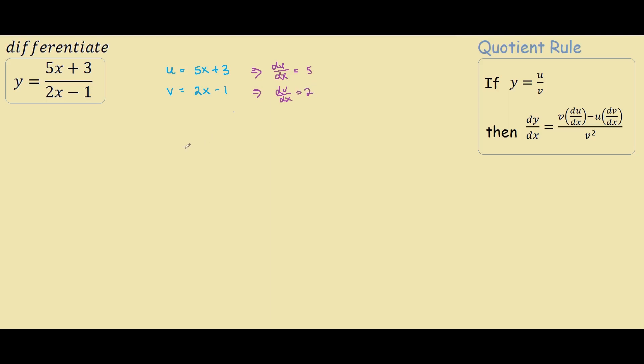And it's just as simple as that. We basically have everything we need to plug into our quotient rule. So we have dy/dx equals v which is 2x minus 1 times du/dx, we found that as 5.